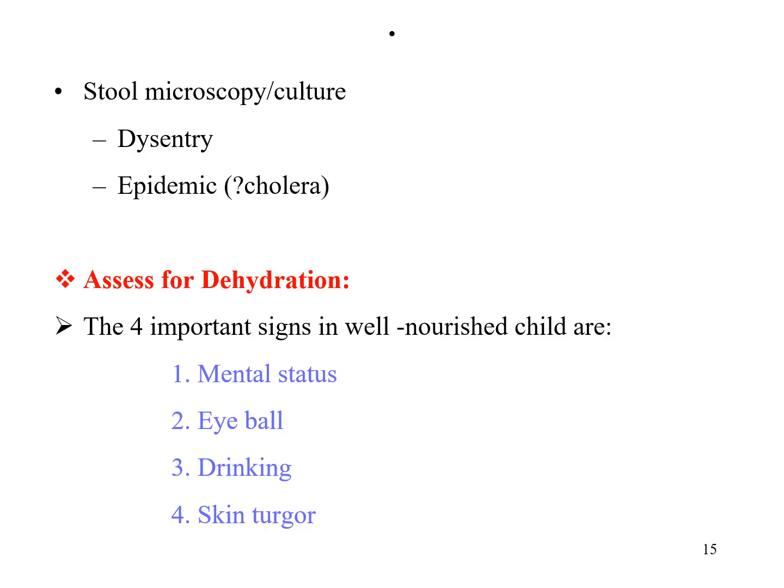We should perform stool microscopy or stool culture if the diarrhea is dysentery or if there is a suspected epidemic such as cholera. For assessing dehydration, the four important signs to check in a well-known child are mental status, eyeball (sunken eyes), drinking ability, and skin turgor.